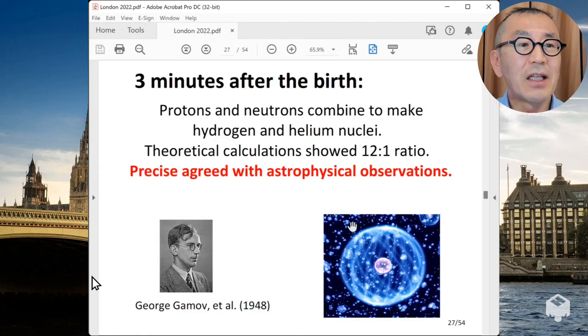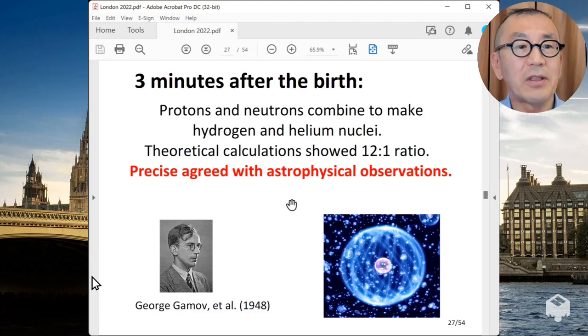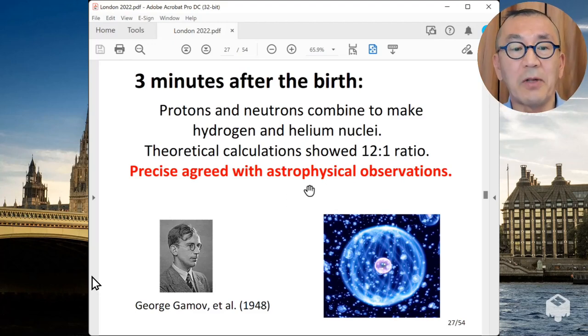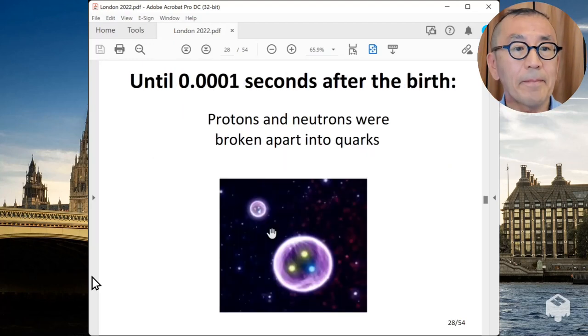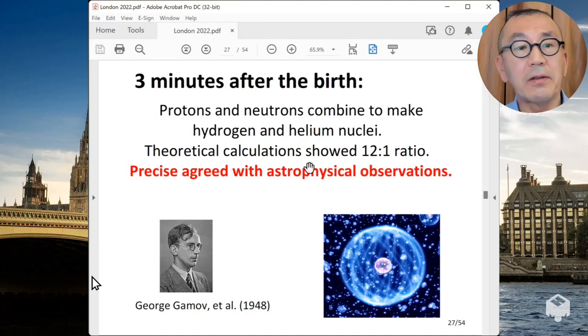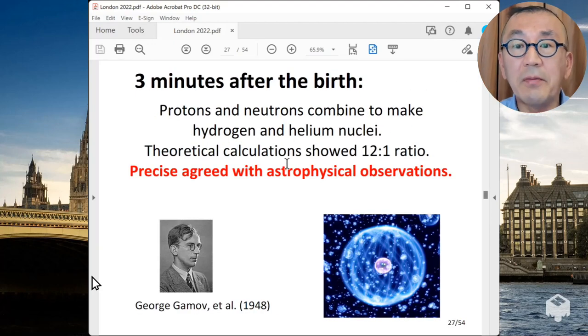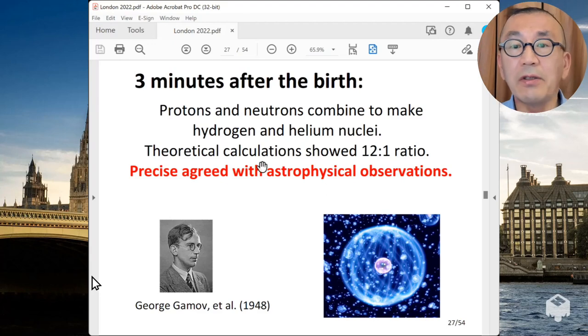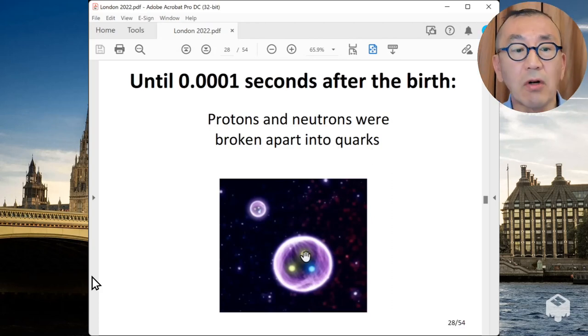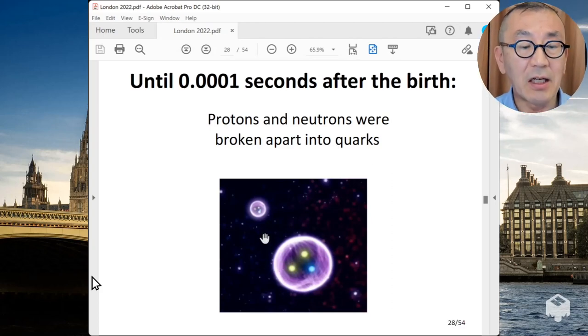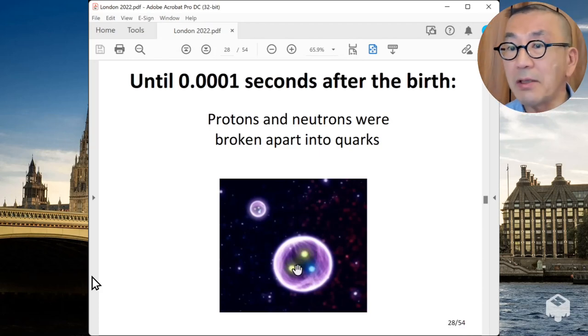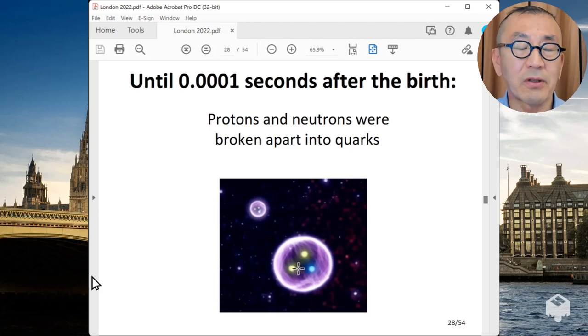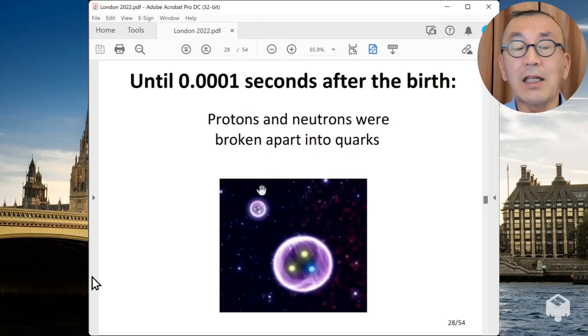As I told you that 3 minutes after the birth of the universe, the protons and neutrons combine to make hydrogen and helium atoms and the predictions have been verified experimentally and numerically, quantitatively. But if you go back to the history of the universe to the much earlier time, the universe was even more hot and dense. So even the protons and neutrons can be dissolved, were dissolved into more elementary particles called quarks. So in the movie, you see this image. These are protons and neutrons. They are made of 3 quarks. And you see 3 quarks inside of the protons and neutrons. That was the state of the universe about 0.001 seconds after the birth.